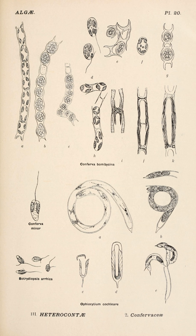Their storage polysaccharide is chrysolaminarin. Xanthophyte cell walls are composed of cellulose and hemicellulose. They appear to be the closest relatives of the brown algae.